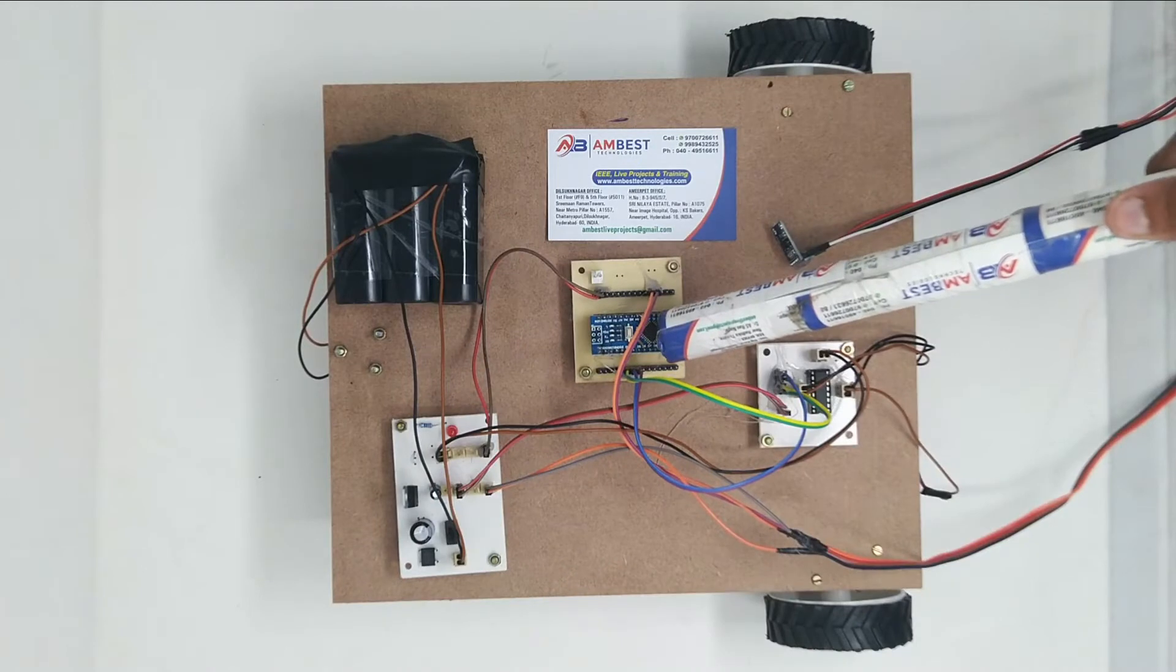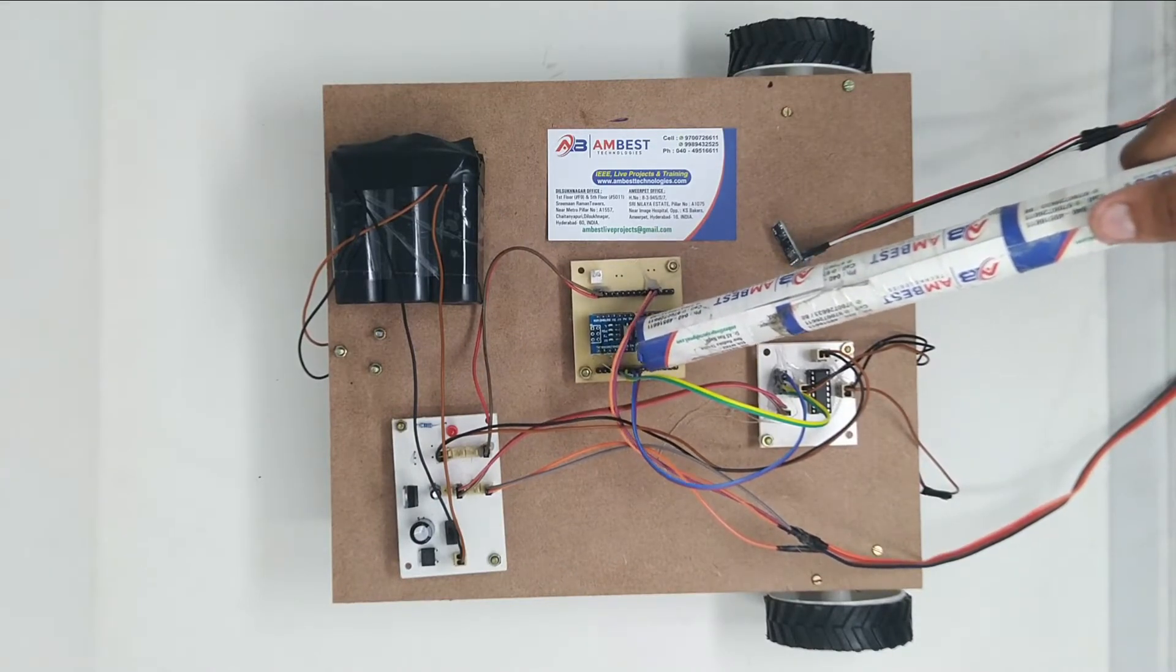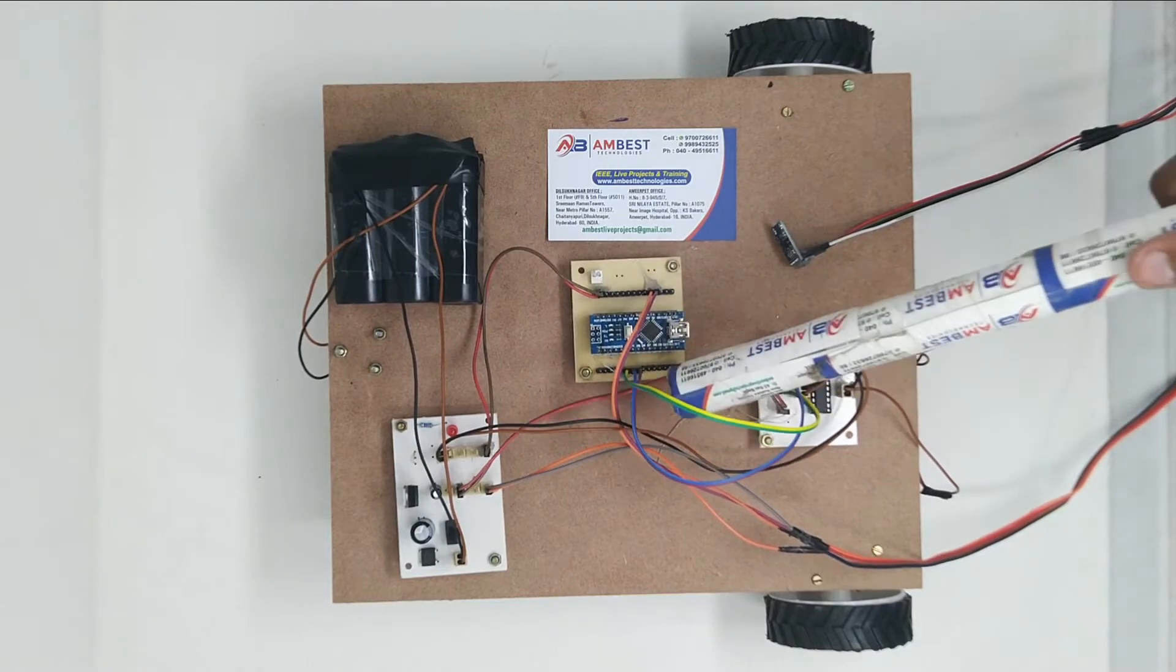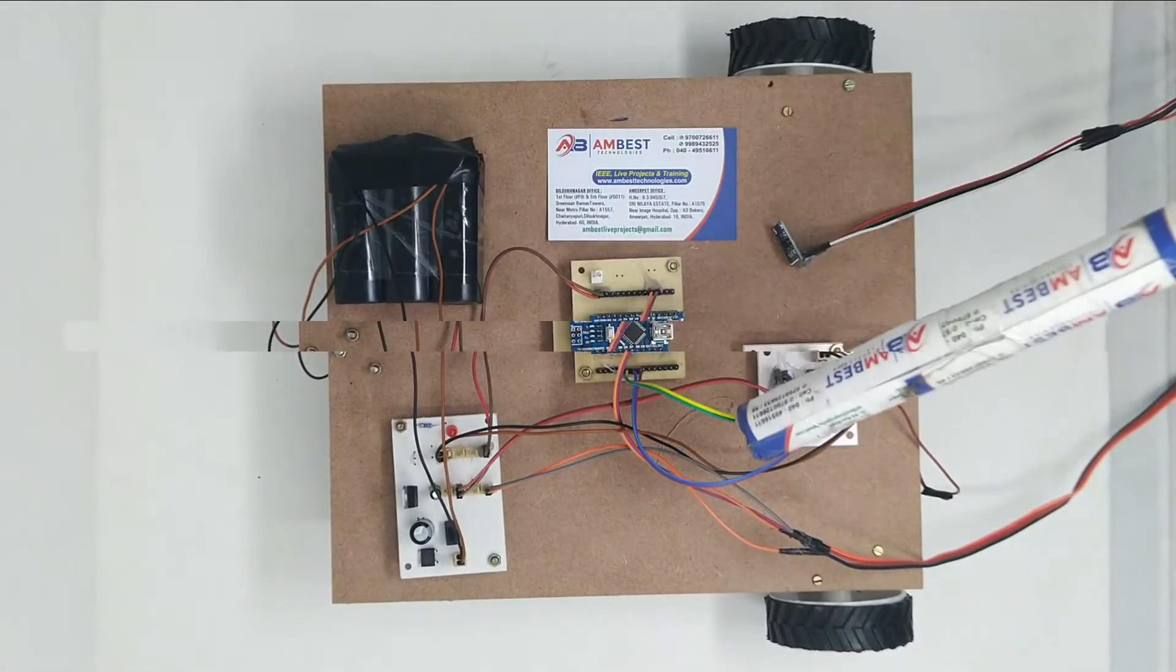The Arduino Nano is based on Atmega328, which is an 8-bit microcontroller which requires a 5-volt power supply. This device is programmed to control the functioning of other peripherals.